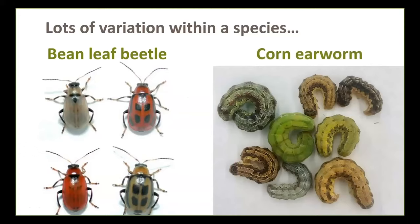Corn earworm also shows a lot of variation in body color and size — basically the color of the rainbow — but two consistent features are an orange head capsule and obvious tubercles, or black bumps, on the sides of the body. Even within a species you can see size and color variation, and in some cases there are meaningful differences between males and females.